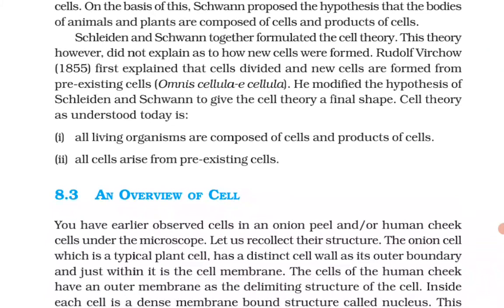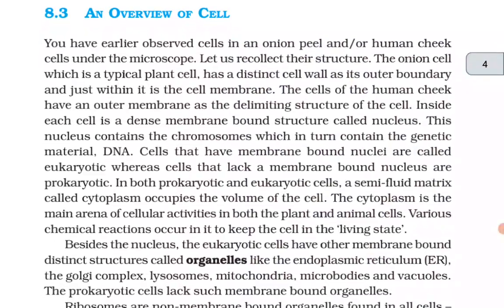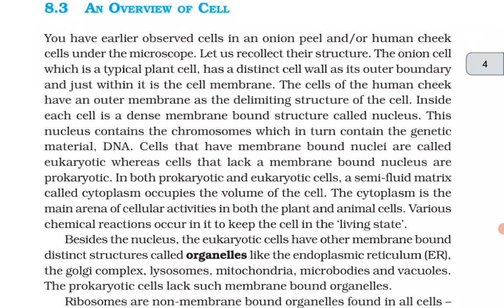He modified the hypothesis of Schleiden and Schwann to give cell theory its final shape. Cell theory as understood today: all living organisms are composed of cells and products of cells, and all cells arise from pre-existing cells. Overview of a cell: you have earlier observed cells in onion peel and human cheek cells under the microscope.